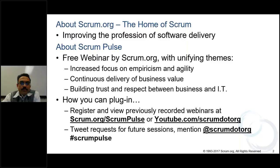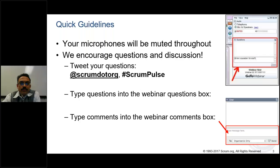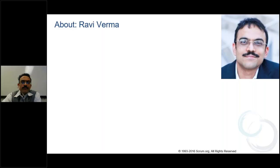We put out these webinars at least once a month, sometimes two times a month, to help educate you and improve your knowledge and understanding of Scrum. If you go to Scrum.org/ScrumPulse, the webinars are also on YouTube. Your microphones are muted, but please ask questions — you can use the question box in GoToWebinar, or tweet at Scrum.org with hashtag ScrumPulse. Ravi will take questions at the end. With that, I'll hand it over to Ravi.